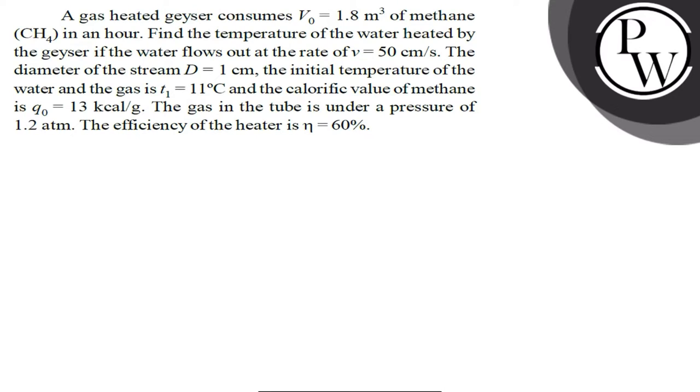Hello guys. This question is: A gas heated geyser consumes V₀ = 1.8 m³ of methane in an hour. Find the temperature of the water heated by the geyser if the water flows out at a rate of 50 cm per second. The diameter of the stream D = 1 cm. Initial temperature of the water and the gas is T₁ = 11°C and the calorific value of methane is Q₀ = 13 kcal per gram.